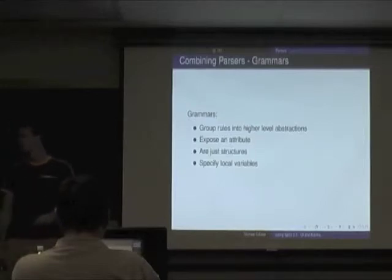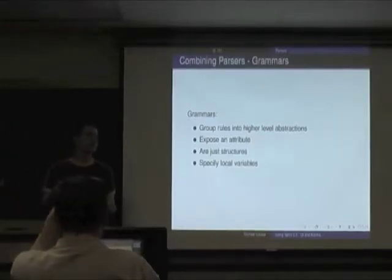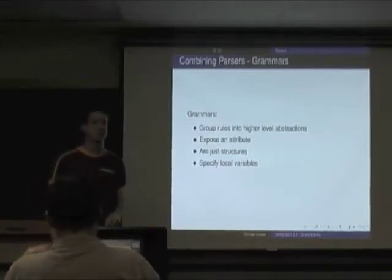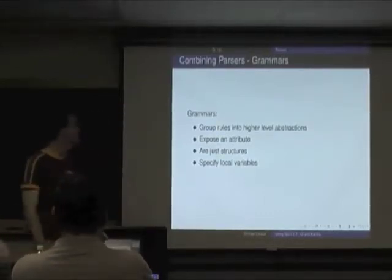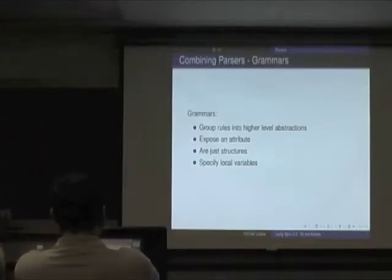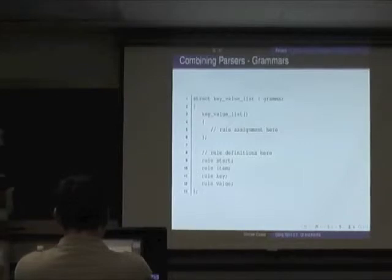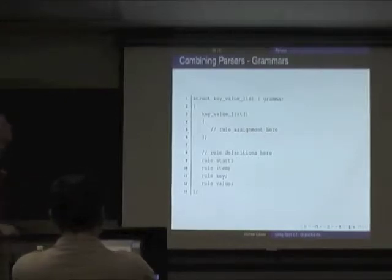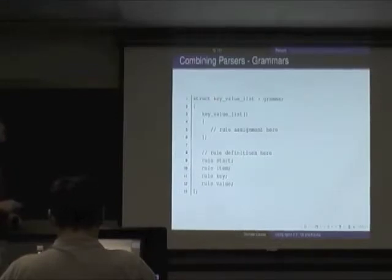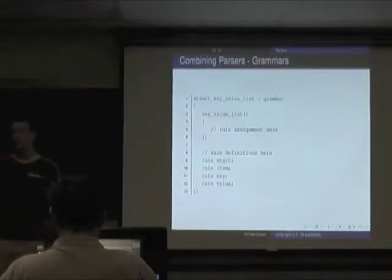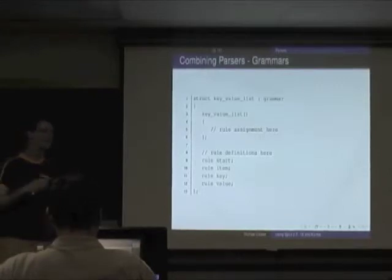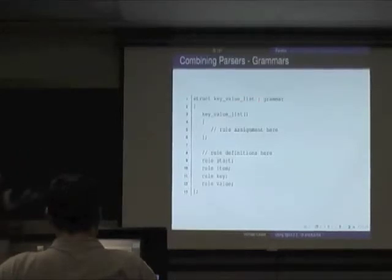Rules can get unwieldy eventually, so we'd like to group them into something more convenient — like a parser that handles key-value pairs. We can do that with a grammar, grouping all these rules together. Grammars are nothing more than a structure inheriting from grammar — meaning everything you used to do with structures you can still do: member variables, methods, constructor arguments.